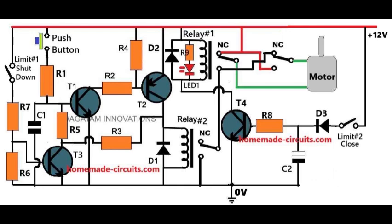When the door is first closed, a switch, limit number 1, gets pressed. This switch prevents a circuit formed by transistors T1 and T2 from activating. The circuit remains inactive because the closed door keeps limit number 1 pressed.